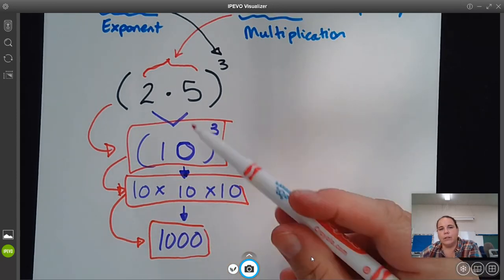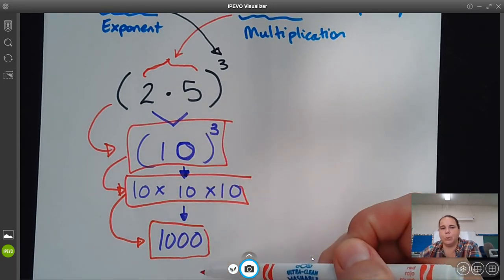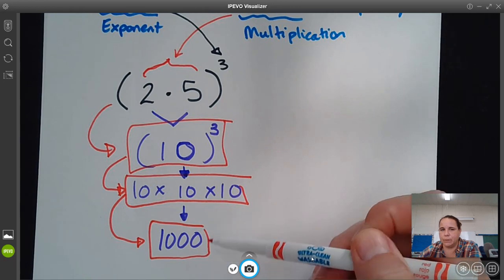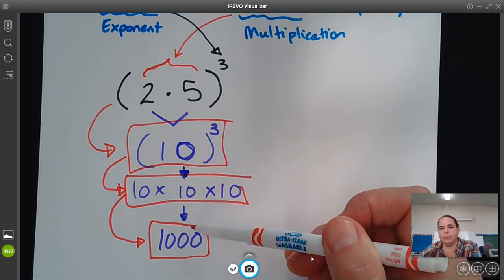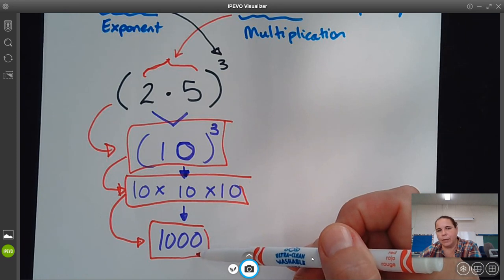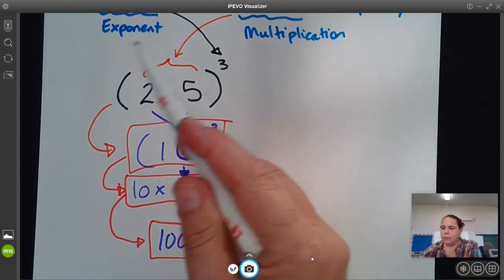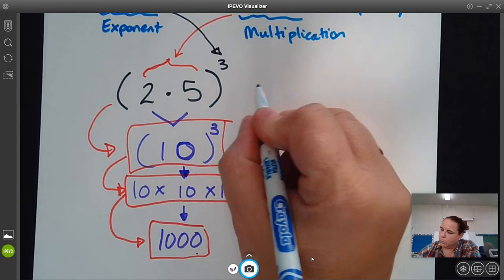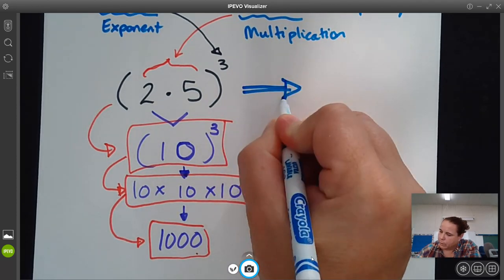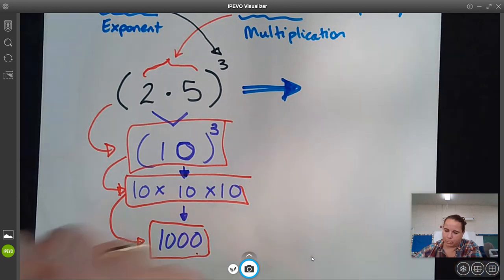So as you get further in mathematics, what you're going to find out is sometimes it's best to leave it like 10 to the third. Other times you're going to want the actual number 1,000. And then sometimes you're going to want to use this power of a product property. So what is that going to look like? So let's talk about that power of a product property.